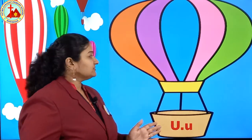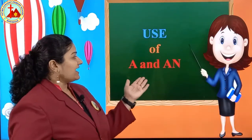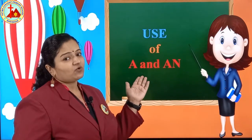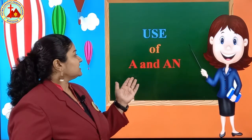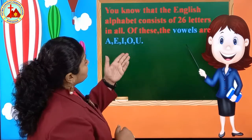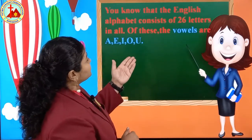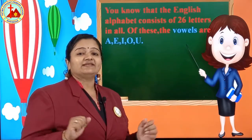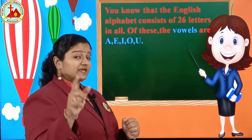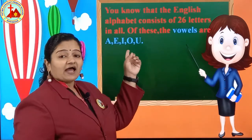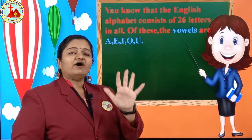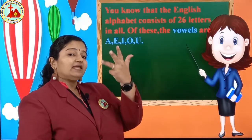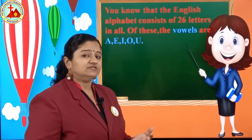Use of A and AN — this is our topic which we are going to learn today. You know that the English alphabet consists of 26 letters in all. From A to Z, A, E, I, O, U — five are only vowels. Again, repeat after miss: A, E, I, O, U are vowels.